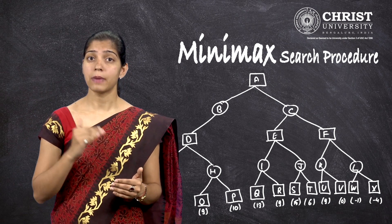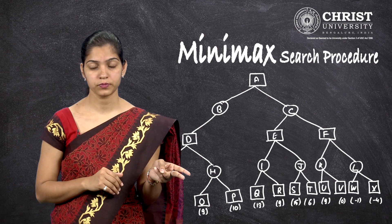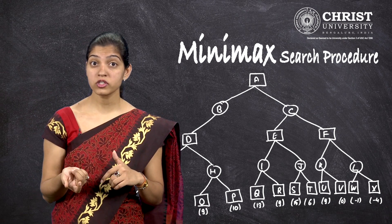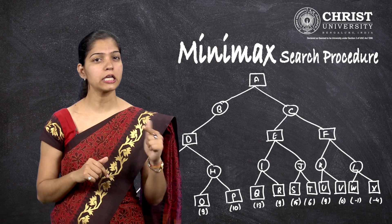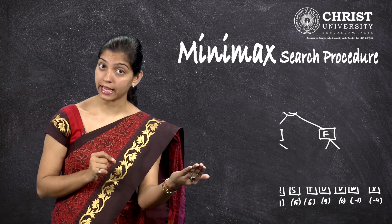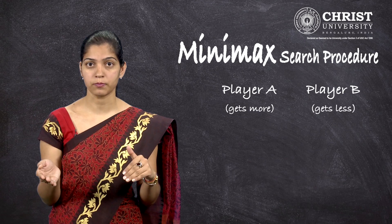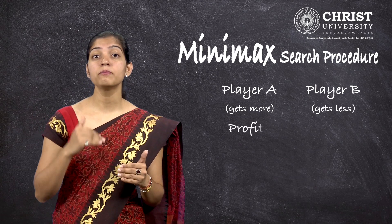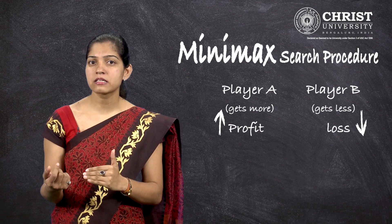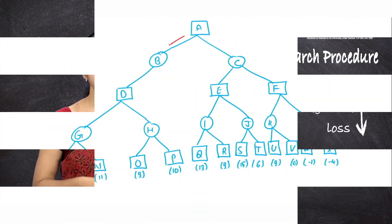We will have two types of nodes: max nodes and min nodes. Both players are playing a game for a share of some amount of cost, and this cost is distributed between player A and player B. If player A gets more, then player B gets less, and vice versa — the loss of one is the gain of the other. So if I am trying to maximize my profit, my opponent is trying to minimize my profit.